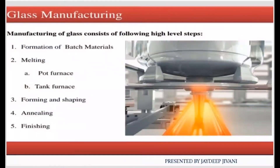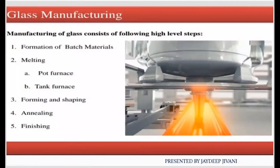The next step is melting. Melting means that the powder form will melt — solid will convert to liquid. You can use heat with two types of furnace: you can use a pot furnace or a tank furnace. So there are two types of furnace required for melting glass, and glass will melt in both types of furnace.